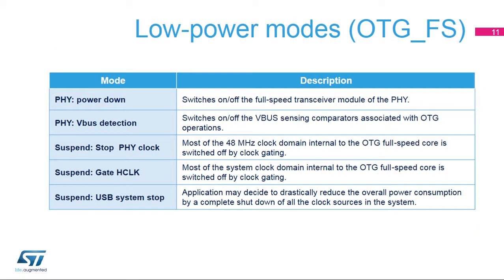Now let's take a brief look at the various low power modes of the PHY and the controller. For the PHY, power down mode can be used, for example, when there is no VBUS present and the session is identified to be not OTG. It is also possible to disable the VBUS sensing related to OTG A and B sessions, if the OTG function is not used.